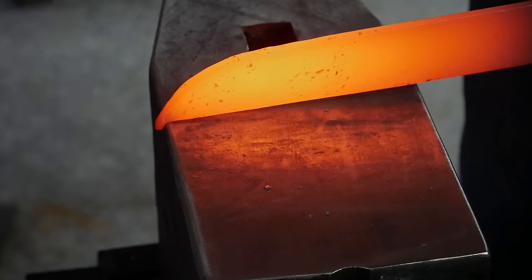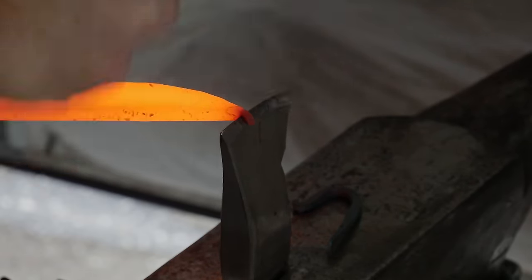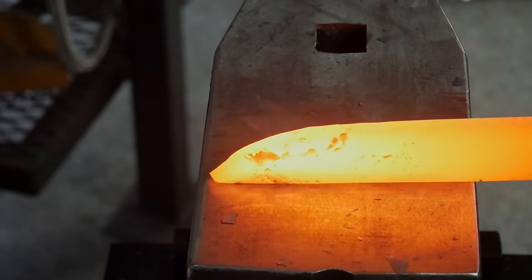I started by forging out the tip and worked it over the side of the anvil creating a little nub that I cut off with my hot cut hardy tool. Looking at the shape now you can see a section of the blade that looks like it would be the edge.